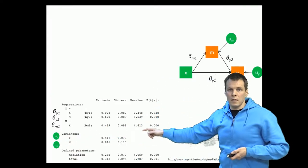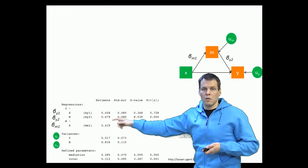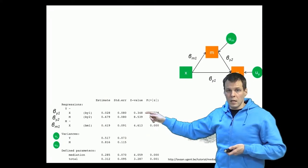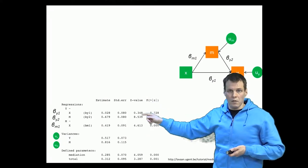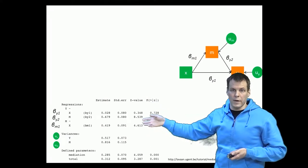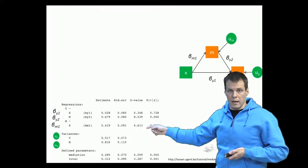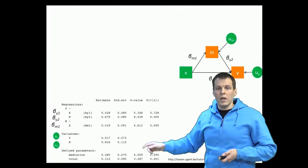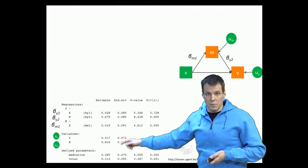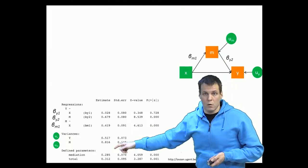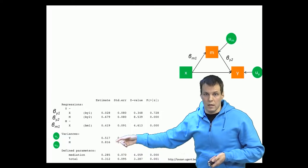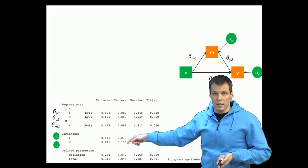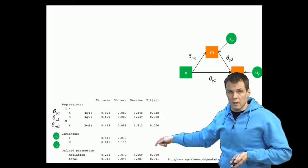We get the estimates, the standard errors, and z-values — not t-values, because this is based on large-sample theory — and then p-values for these estimates. We can also calculate the mediation effect using this package; we define it in the model and the software calculates it automatically, along with the standard error, z-value, and p-value.